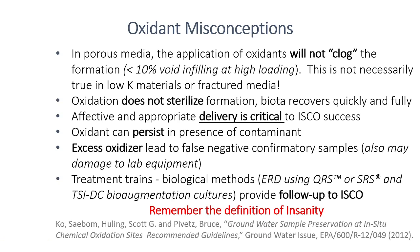Let's briefly address a couple of oxidant misconceptions that come up over and over again. Oxidants are reacting with the subsurface, creating end products that differ by oxidant. You're taking the contaminant and typically creating another dissolved ionic species or a precipitate — sulfate in the case of persulfate, manganese dioxide in the case of permanganate. The key point here is: by adding oxidants, you do not clog formations. Even at really high loadings of oxidants, there is less than 10% void infilling — less than 10% of available pore volume even at ultra-high loadings. So you will not clog a formation.